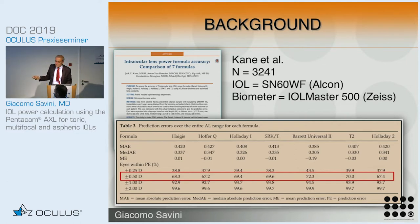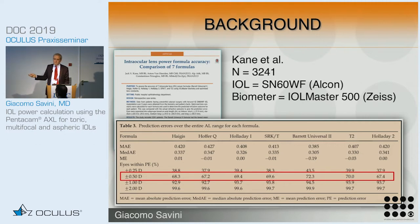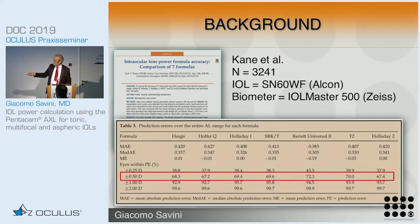From this paper, which is already three years old, he compared the Haigis formula, Hoffer Q, Olsen A1, SRKT, the Barrett Universal 2, the T2 — which is an uncommon modification of the SRKT that never became so famous — and the Holladay 2.